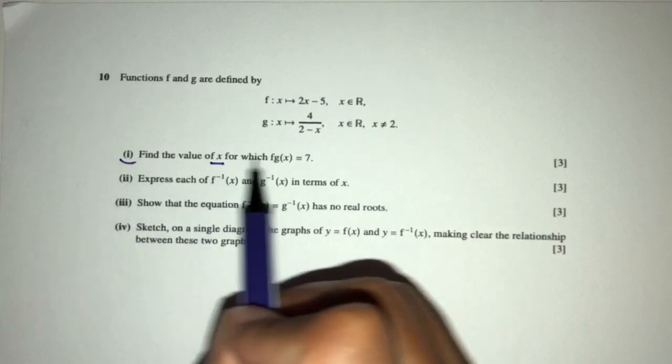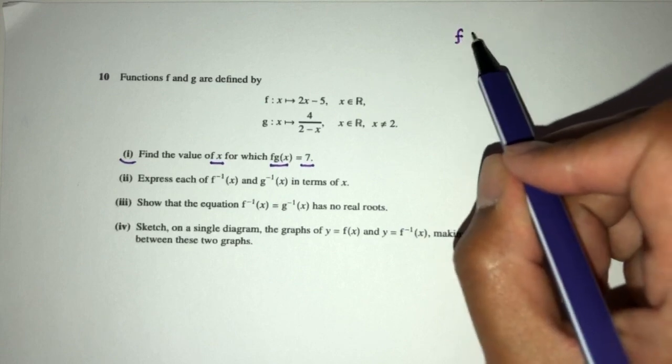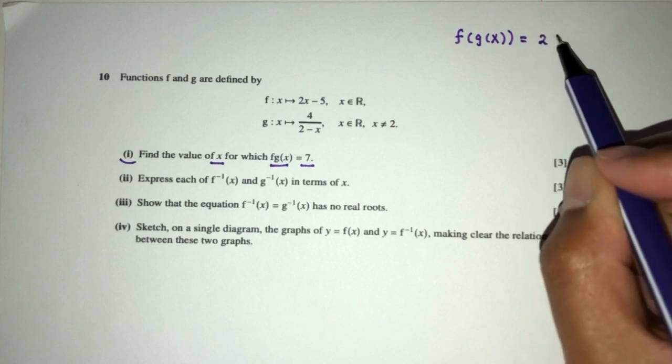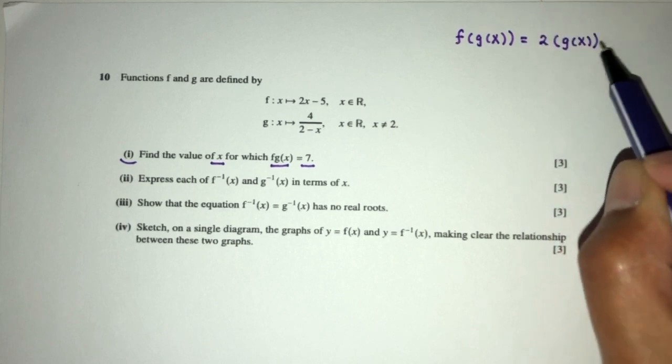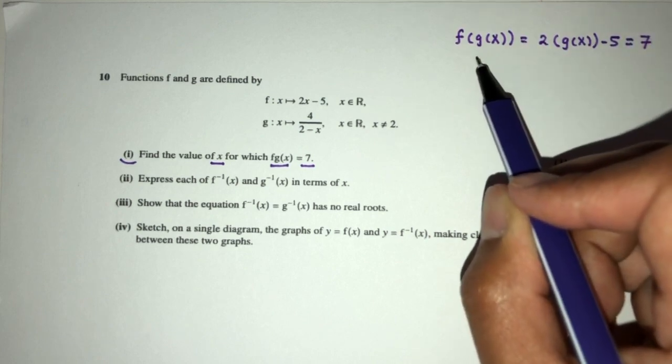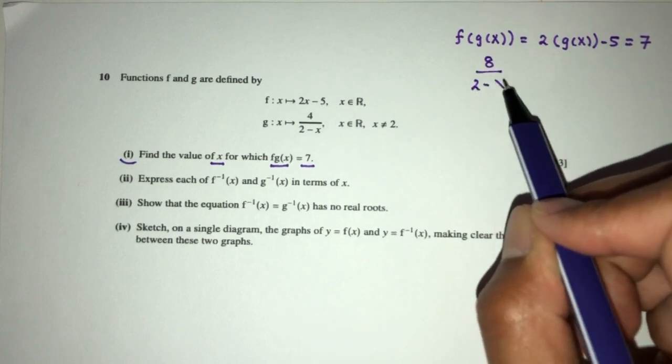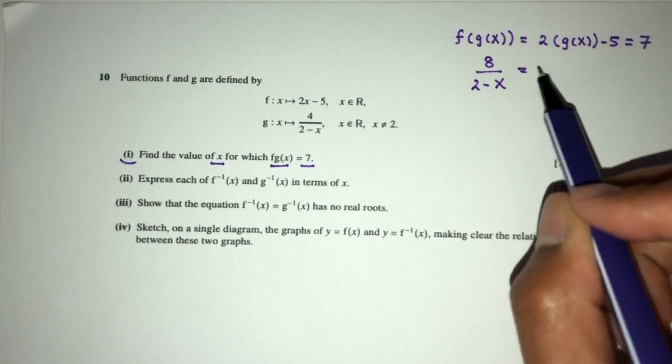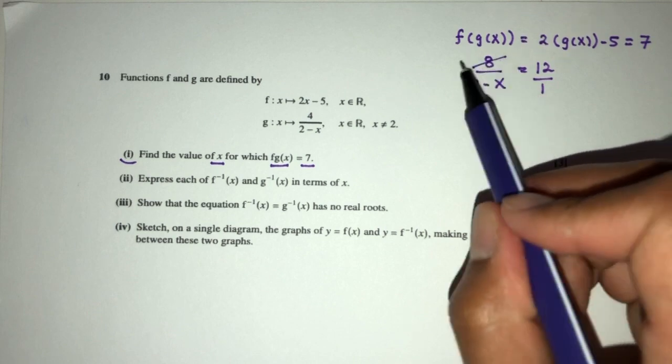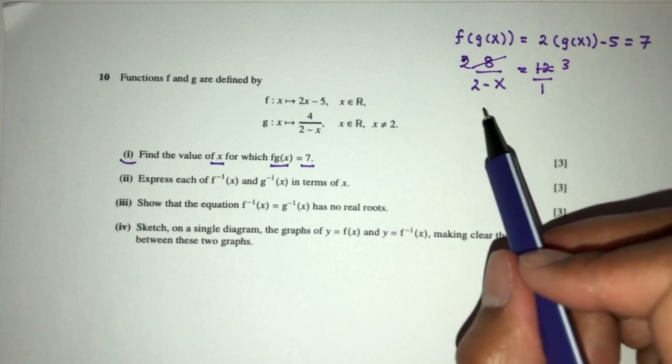Find the value of x for which f(g(x)) = 7. So let's first find f(g(x)). It is simply 2 times g(x) minus 5 equals 7. So 2 times g(x) is 2 times this, which is 8/(2-x). Send this over here, that will be 12. Then we can simplify. Divide by 4 on both sides, that will be 2 equals 3. Divide by 4 on both sides.